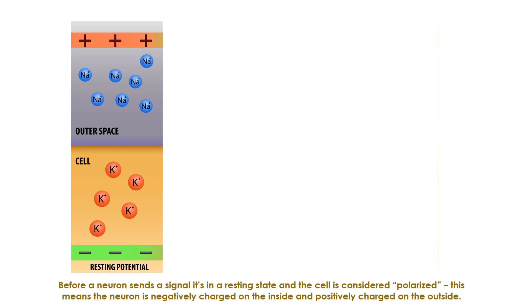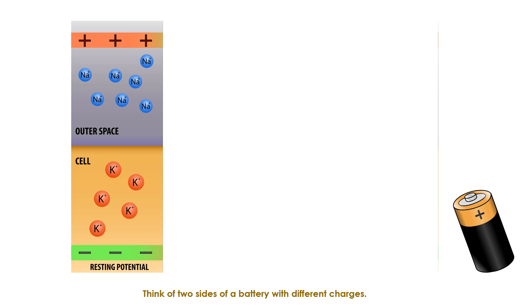Before a neuron sends a signal, it's in a resting state and the cell is considered polarized. This means the neuron is negatively charged on the inside and positively charged on the outside. Think of two sides of a battery with different charges.